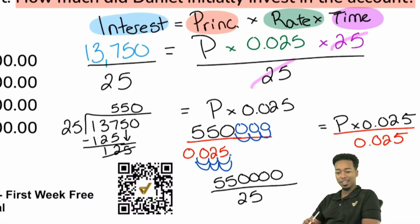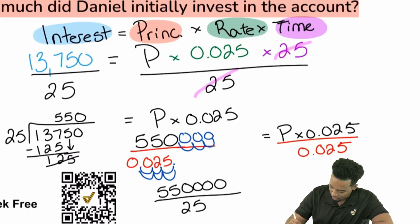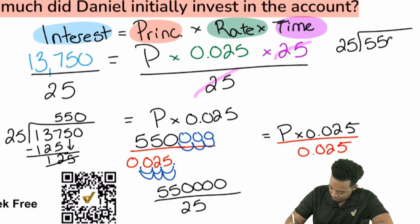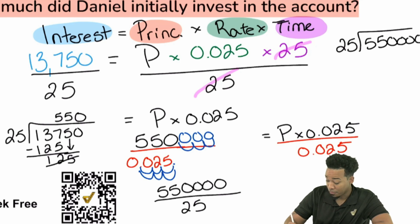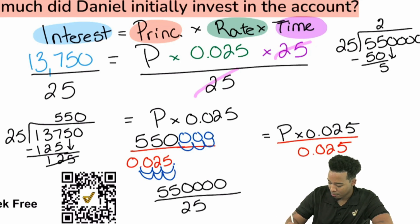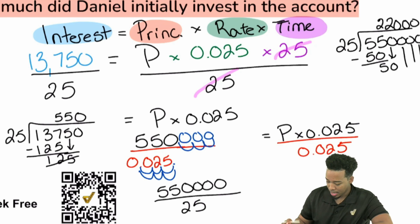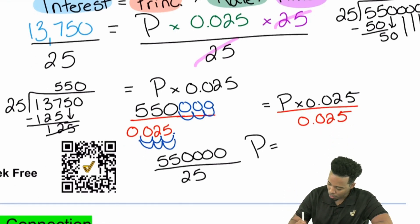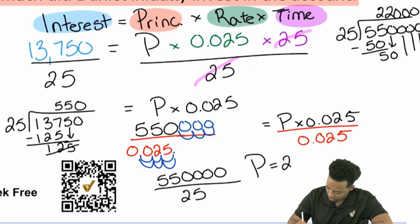Now that we know that, let's get to work. I'll go ahead and do the long division. 25 goes into 55 twice — subtract 50, you have 5, bring down the zero. That's twice again. Then bring down the remaining three zeros one by one. And that is it right there. The principal investment was $22,000.